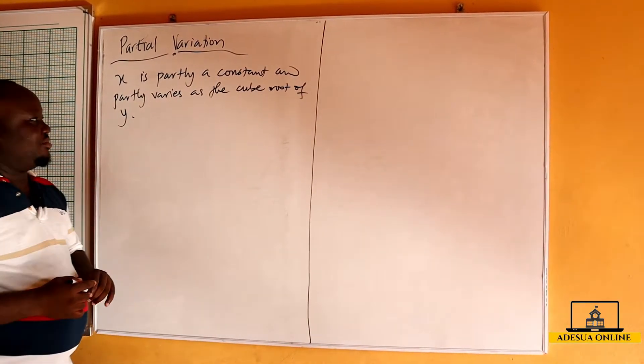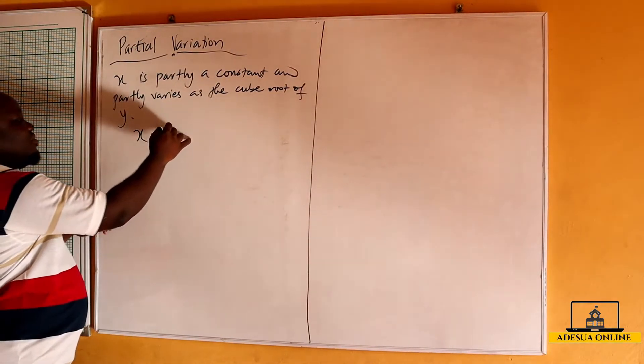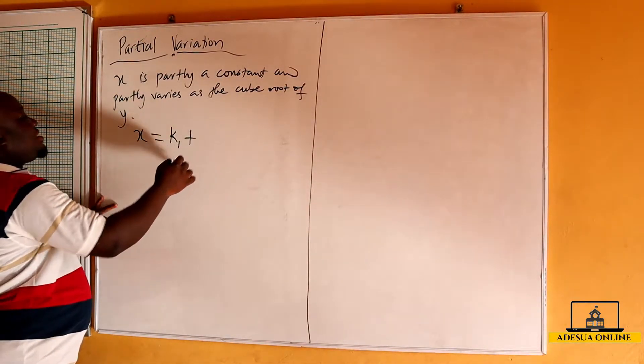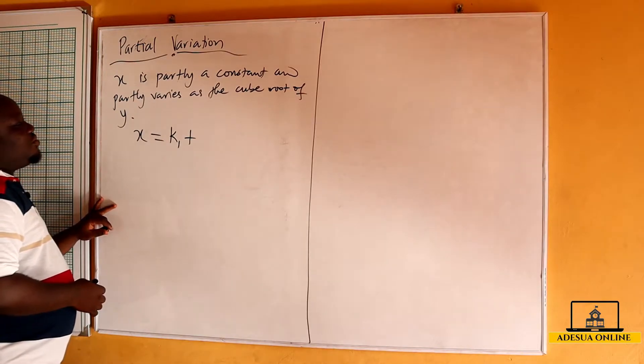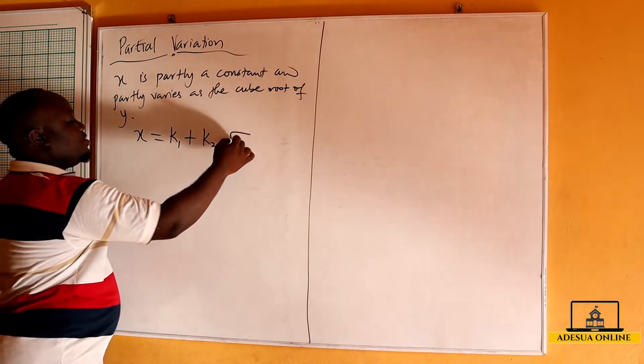Now if I'm being asked to write this in variation form, this becomes x is equal to k1 plus, and partly varies as the cube root of y, so k2 and then I have my cube root of y.